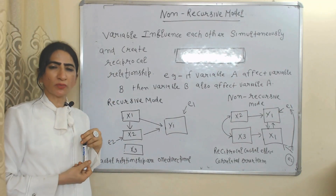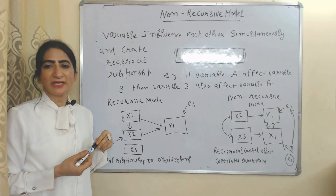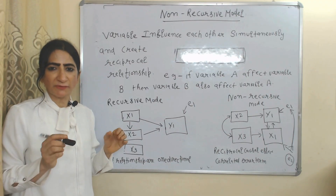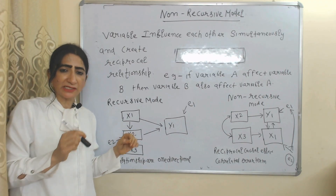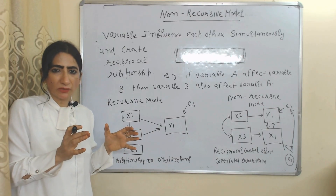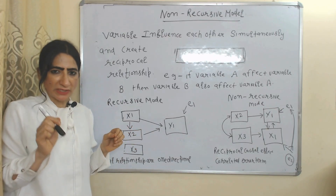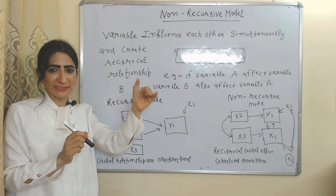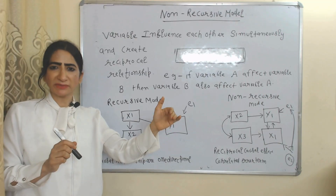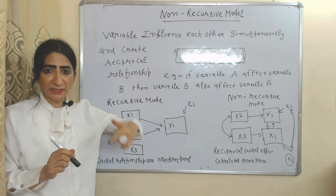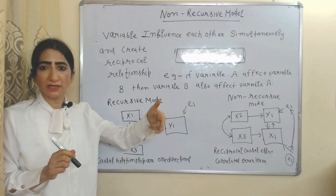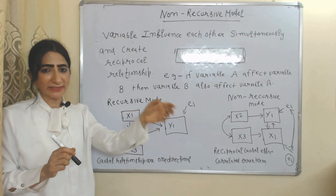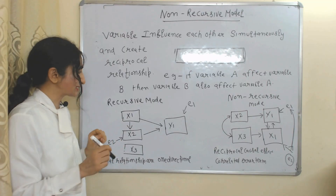Now we are going to talk about the non-recursive model. In the case of a non-recursive model, variables influence each other simultaneously, creating a feedback loop and reciprocal influence. For example, if variable X influences Y, then Y will also influence X.